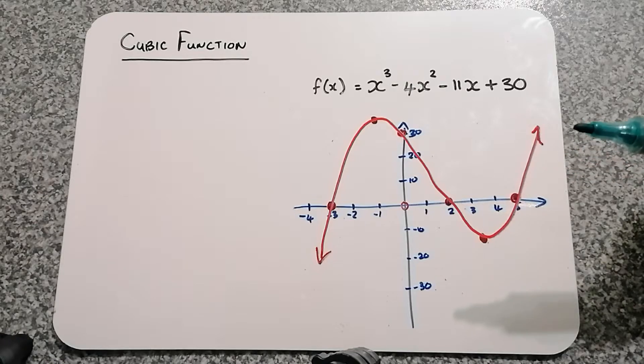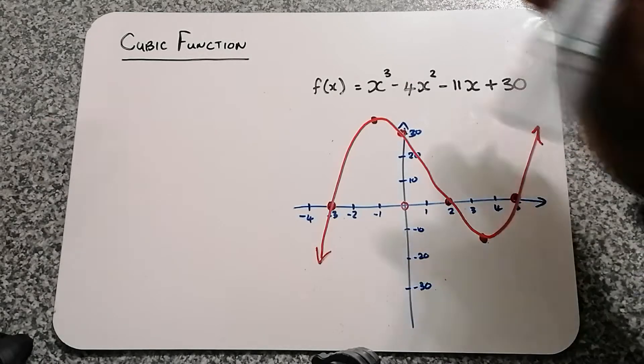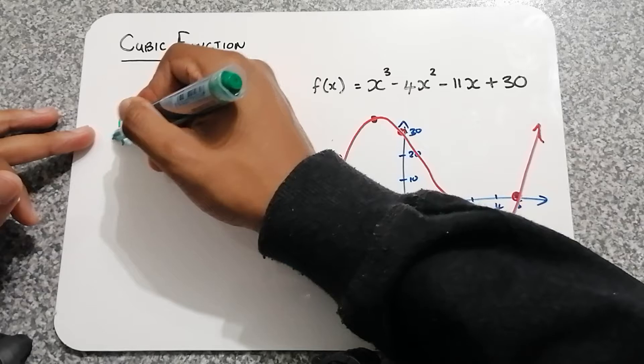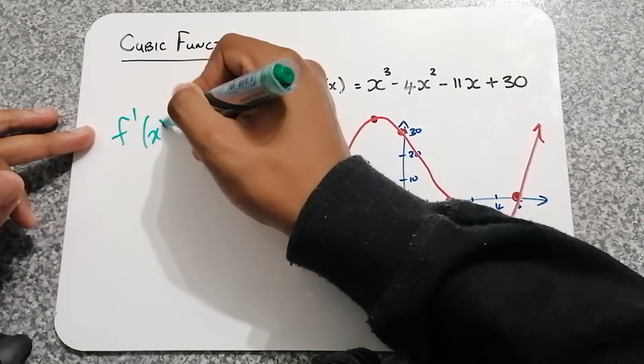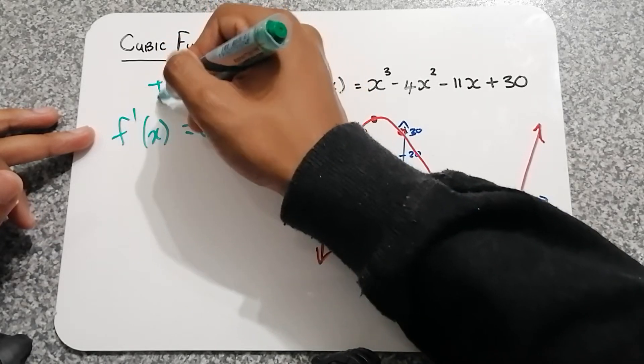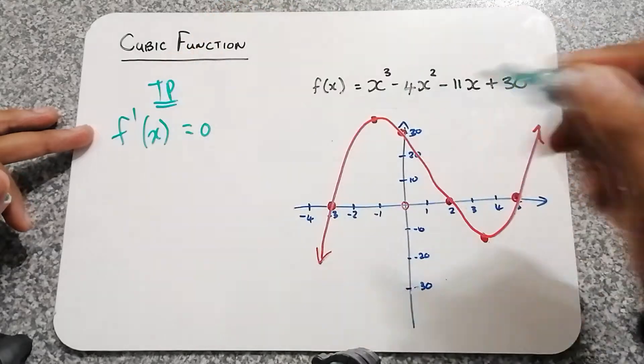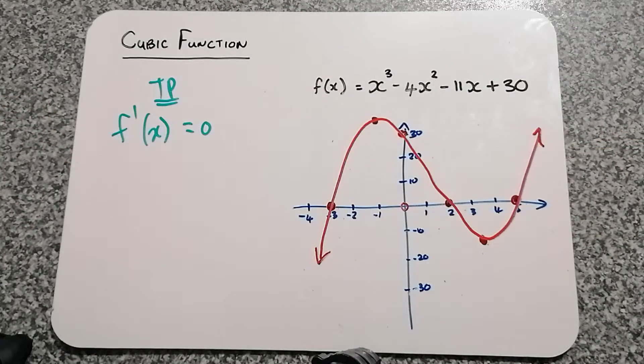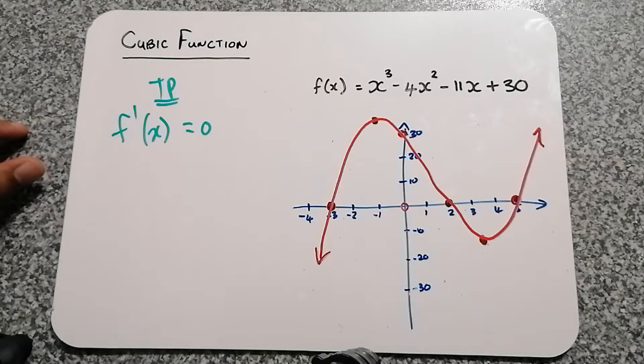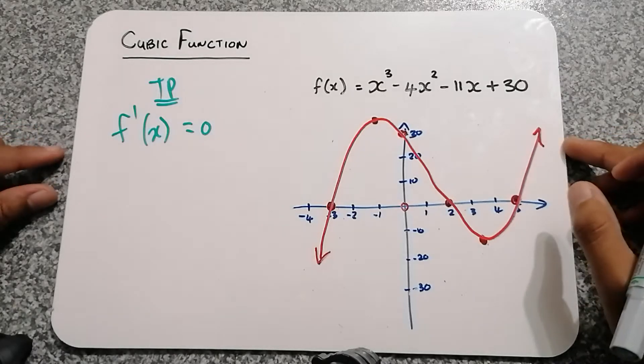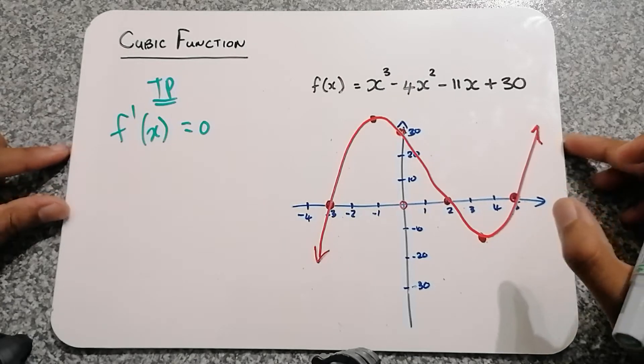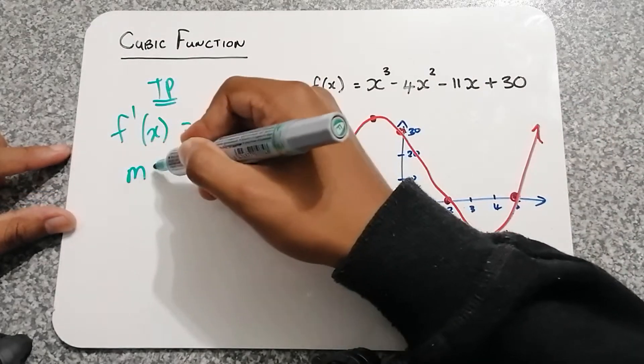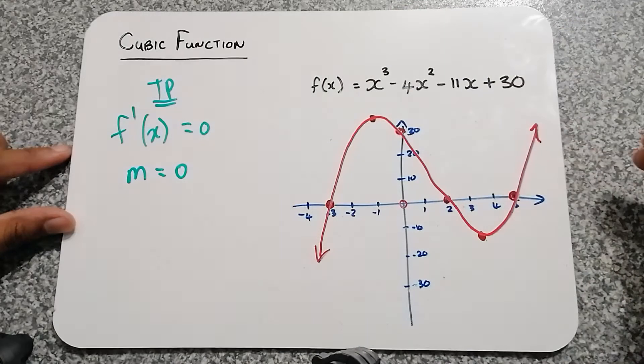Now first of all, we're going to address the question: why is it that when we are working out a turning point, do we say that the derivative has to be equal to zero? So first of all, I want you to think about this: what is a derivative? I know I've mentioned this in a previous video, but maybe you forgot.